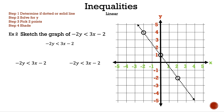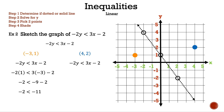Now we need to pick two points — one to the left of the line and one to the right — so we know where to shade. Let's pick (negative 3, 1) and (4, 2). We're going to use the given inequality in case we made a mistake. Substituting (negative 3, 1): negative 2 times 1 is less than 3 times negative 3 minus 2. Negative 2 times 1 is negative 2, and 3 times negative 3 is negative 9, and negative 9 minus 2 is negative 11. So we have negative 2 is less than negative 11. That is false.